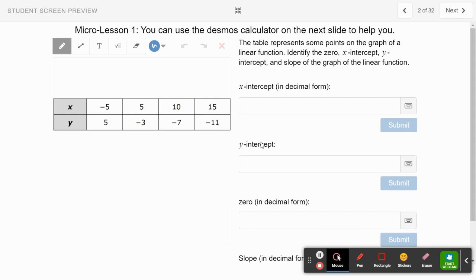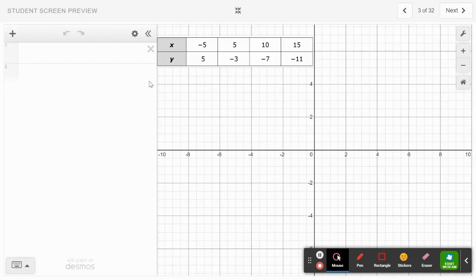We have our x values here and our y values. The x values are all on the first line, and then the corresponding y values are right below it. You go to your next slide and you want to put these values in.